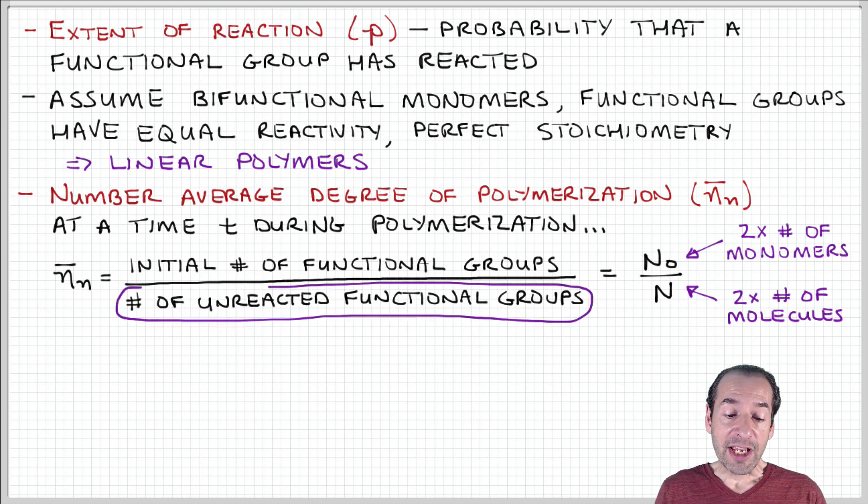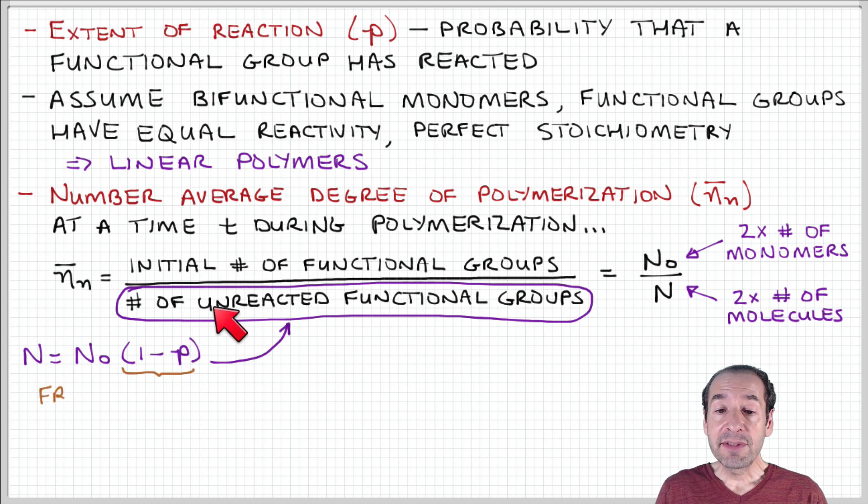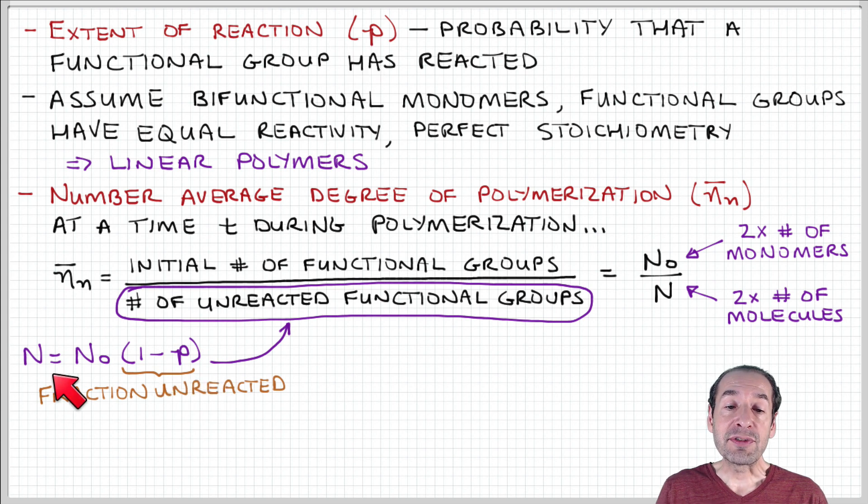In this way, we can relate the number of unreacted functional groups to this extent of reaction as follows. We can express this as the initial number of functional groups times the probability that the functional group has not yet experienced a reaction, and this is equal to 1 minus p.